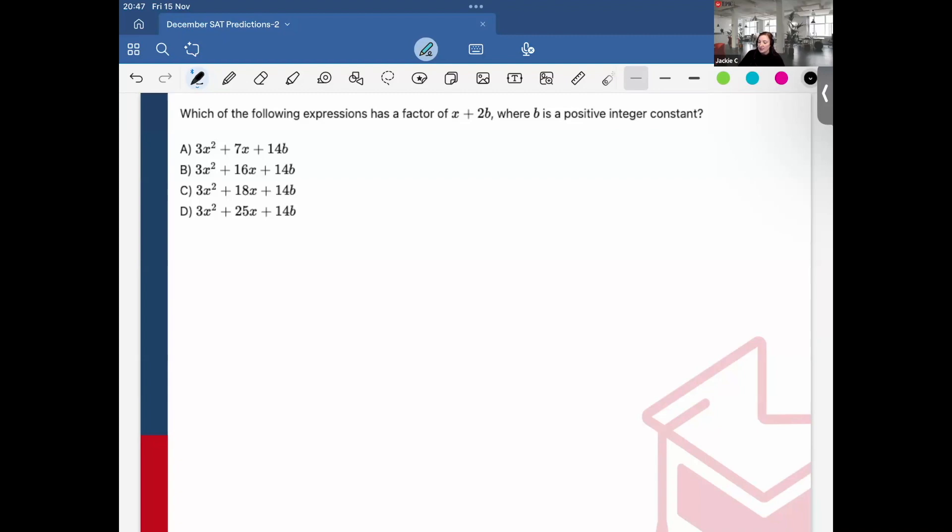It has a factor of x + 2b. I'm scanning the answer choices. I see all of these values are the same, and the constant values are also the same, 14b. So that's going to make my life simpler. For example, if I have x + 2b, then I can create—this must be 3x because x times 3x will give me 3x². And then plus some constant k. That's going to equal answer choice A: 3x² + 7x + 14b.